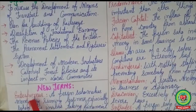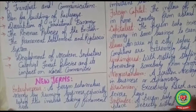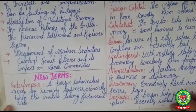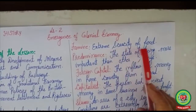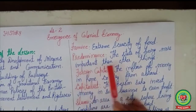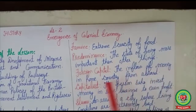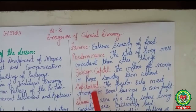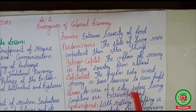First, we will go through the new terms. Entrepreneur: a person who makes money by running a business, especially when this involves taking financial risk. Famine: extreme scarcity of food. Predominance: the state of being more important than other things. Foreign capital: the inflow of money into a home country from abroad. Capitalist: a person who invests money in some business to earn profit. Slums: an area of a city where living conditions are extremely bad.